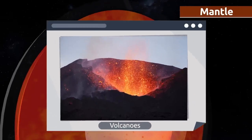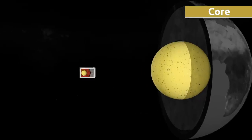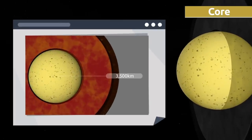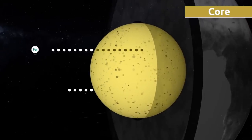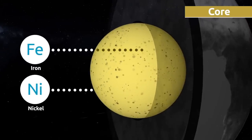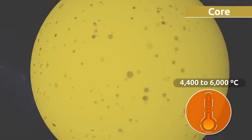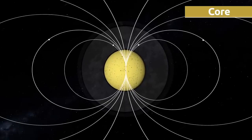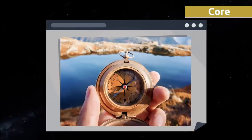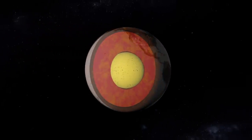When magma reaches the surface, volcanoes erupt. The core is the innermost layer of the earth and is 3,500 kilometers thick. The inner part of the core is made up of solid iron, while the outer part is made up of liquid iron and nickel. Temperatures in the core range from 4,400 to 6,000 degrees Celsius. The movement of molten metal in the outer core creates electric currents that produce magnetic fields — which is why we can use instruments like the compass.